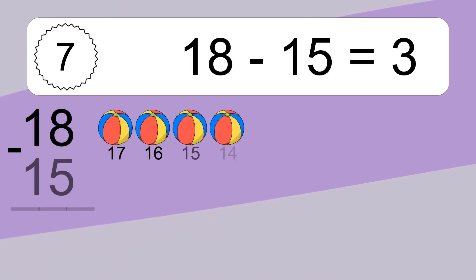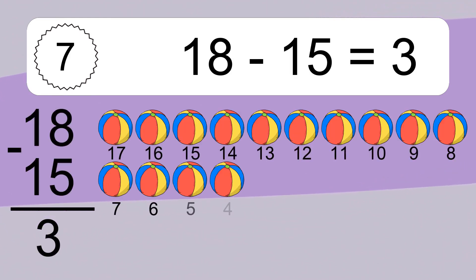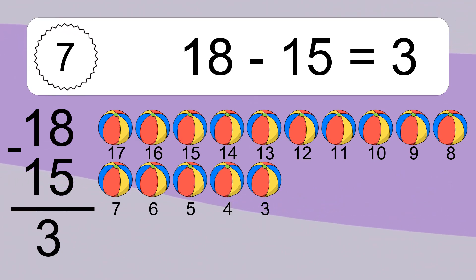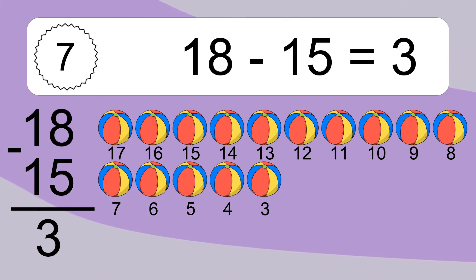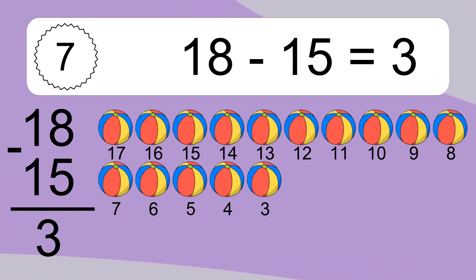18 minus 15 equals what? 18 minus 15 equals 3. Let's count it: 17, 16, 15, 14, 13, 12, 11, 10, 9, 8, 7, 6, 5, 4, 3.